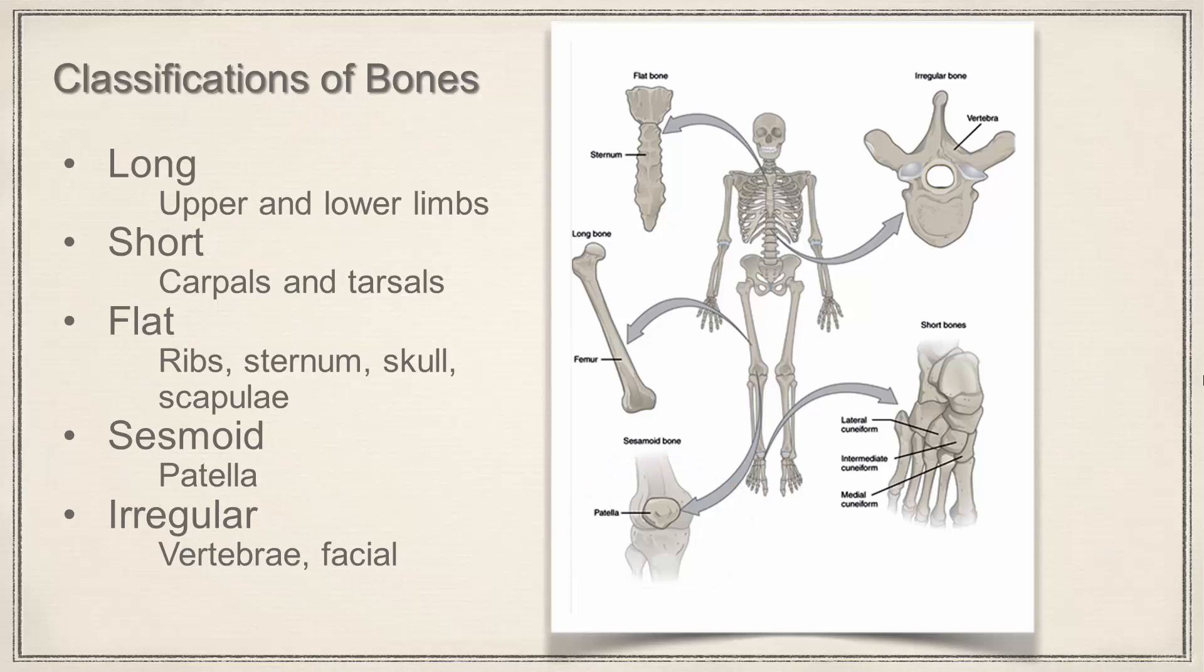And we'll be discussing those later. And then irregular bones would be like the vertebrae, also some of the bones in the skull such as the sphenoid bone, which again we'll take a look at later. But it crosses or spans the width of the skull - it's kind of a bat or butterfly shape. That's also an irregular bone.